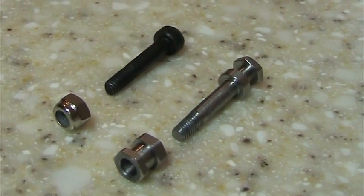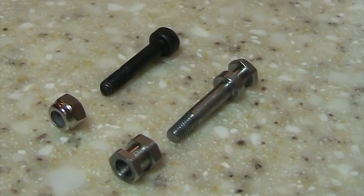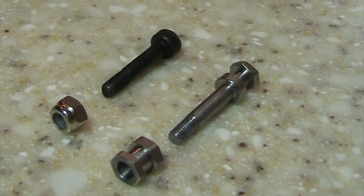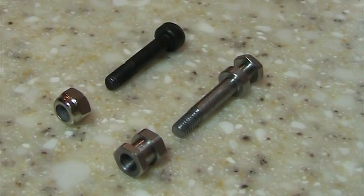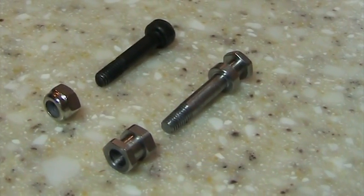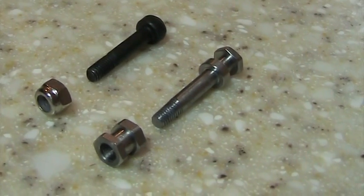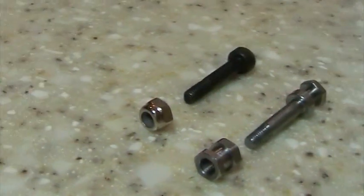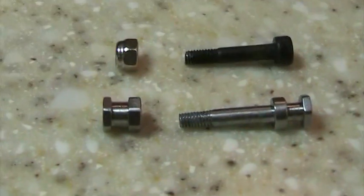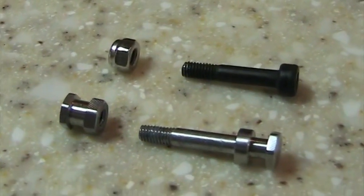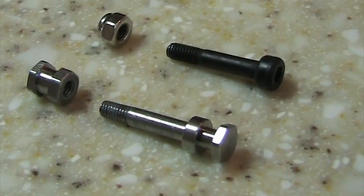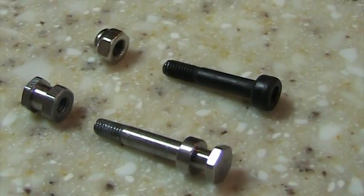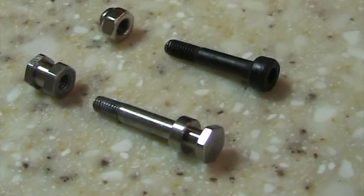This is a shot of the original socket head bolt and nylock nut on the left and the new Chinese screw and nut on the right, just showing you what they look like in the same orientation as it would go into the heli. The end with the round boss on it on the actual screw goes into where the screw head would go, and the hex is the same size as the nut so you don't need any special tools.